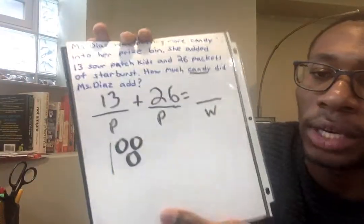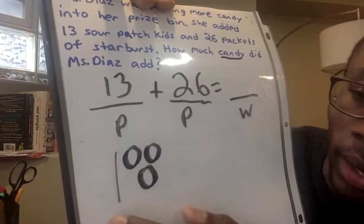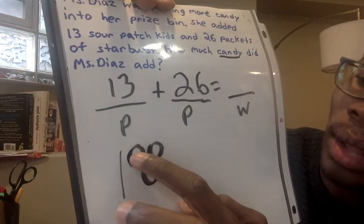For 13, I want to show one quick 10. So 10, 11, 12, 13. 13 looks just like that. I have one quick 10, 10. And I count 11, 12, 13.